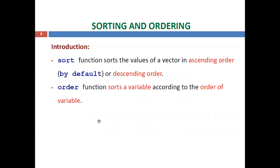The sort function sorts the values of a vector in ascending order by default. If you want to sort in descending order, you need to specify it explicitly. The order function sorts a variable according to the order of that variable. So the key difference is: sort works on the values of a vector, while order works on the variable and returns positional indices.